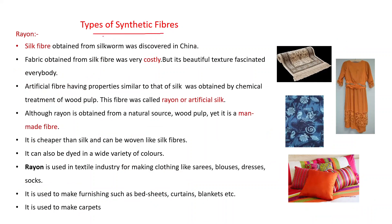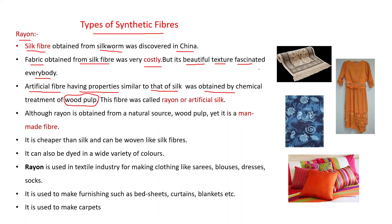Now we will discuss some synthetic fibers. The first one is rayon. Silk fiber, which we discussed in lower classes, is obtained from silkworms and was discovered in China. Fabric obtained from silk was very costly but had a beautiful texture. An artificial fiber having properties similar to silk was obtained by chemical treatment of wood pulp, and that fiber is known as rayon. It looks like silk, that is why it is known as artificial silk.